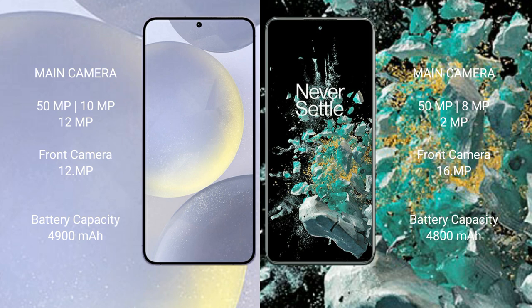The Samsung Galaxy S24 Plus features a triple rear camera setup of 50MP plus 10MP plus 12MP, with a 12MP front camera. The OnePlus 10T features a triple rear camera setup of 50MP plus 8MP plus 2MP, with a 16MP front camera. The S24 Plus has a 4900mAh battery with 45W fast charging, while the OnePlus 10T has a 4800mAh battery with 150W fast charging support.